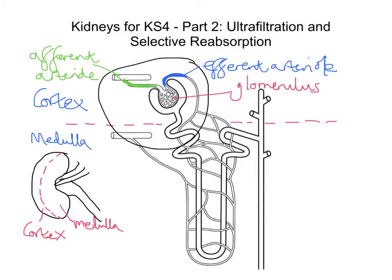You can see that the glomerulus is sitting in what appears to be a capsule — I'll shade it in purple to highlight it. That capsule is called the Bowman's capsule. This is the first part of our nephron, and this is the region where we get the first stage in the process of filtering blood. Blood at high pressure comes in from the renal artery through the afferent arteriole and passes through this ball of capillaries called the glomerulus.